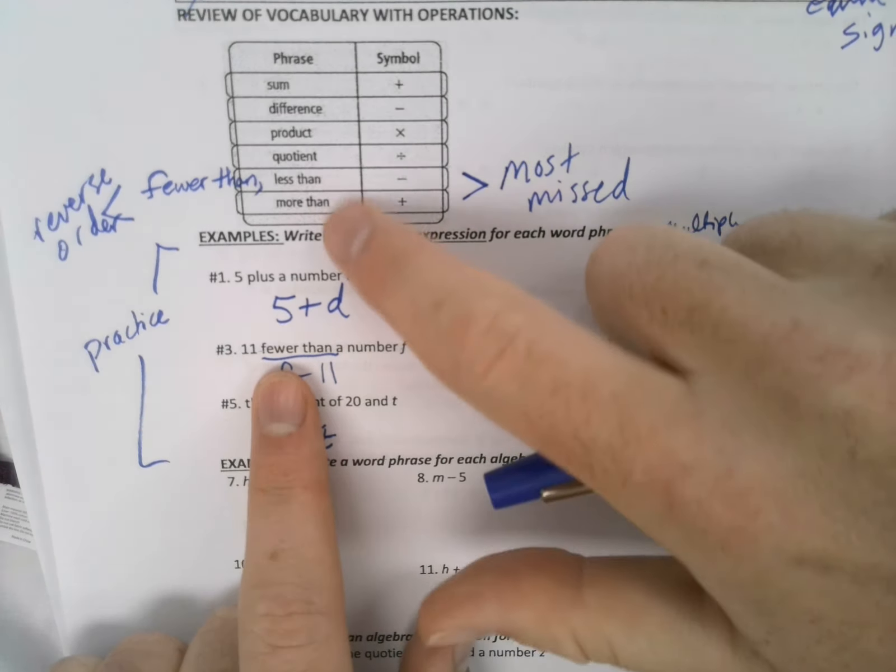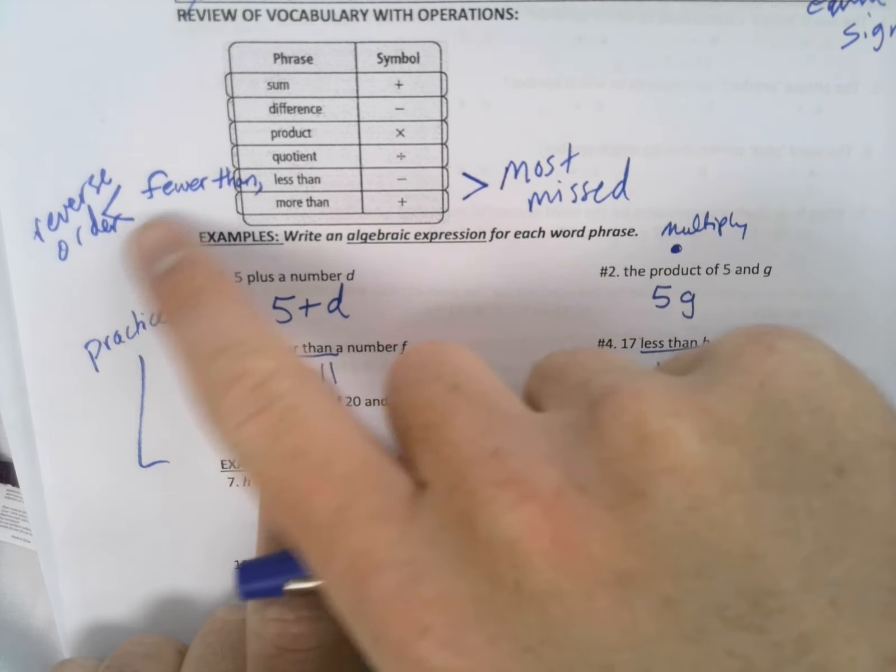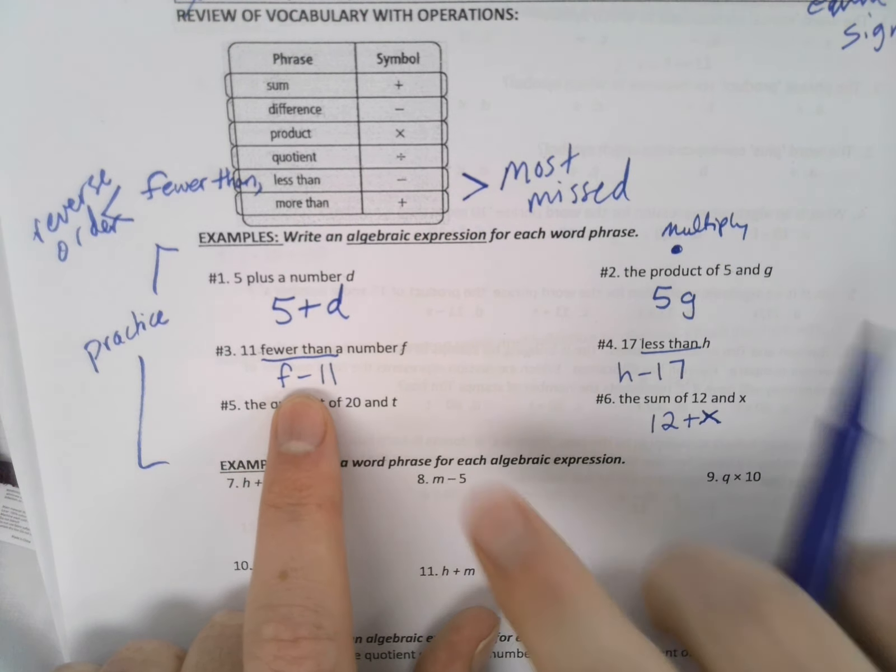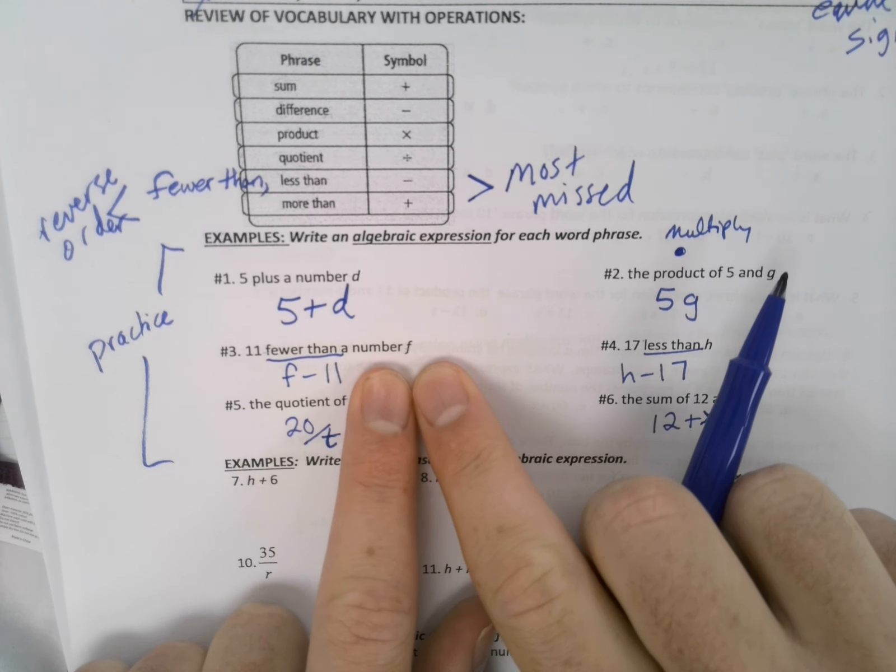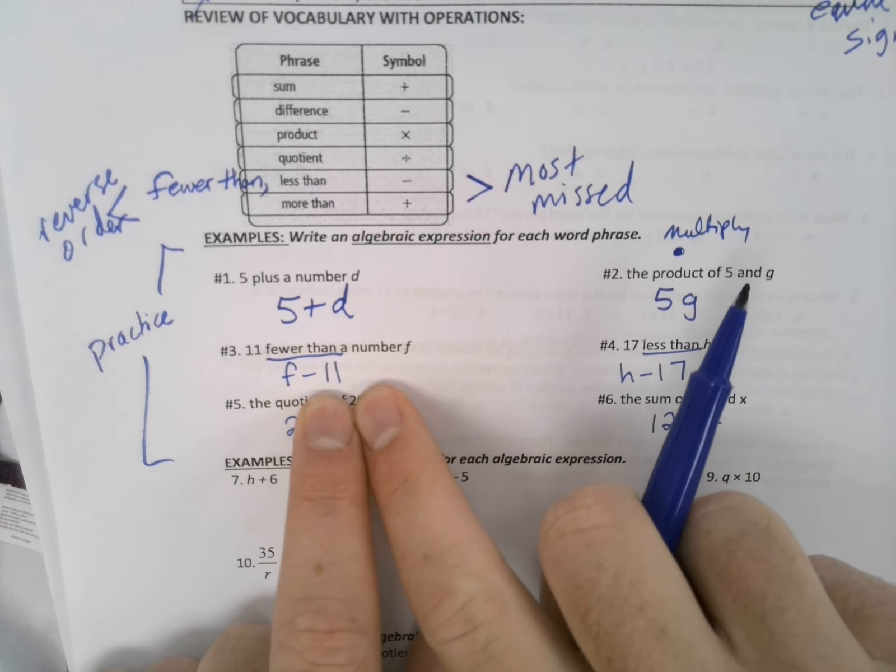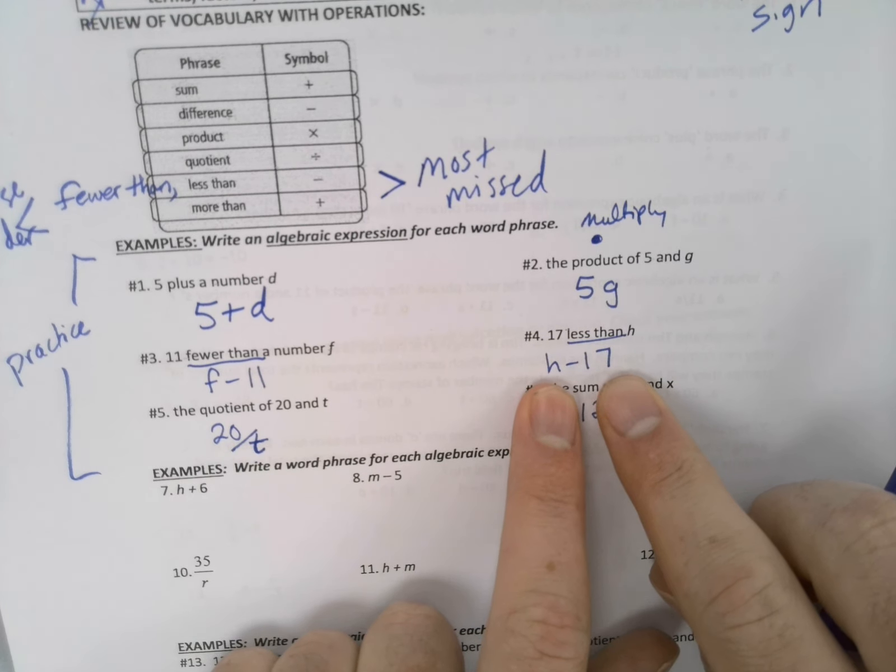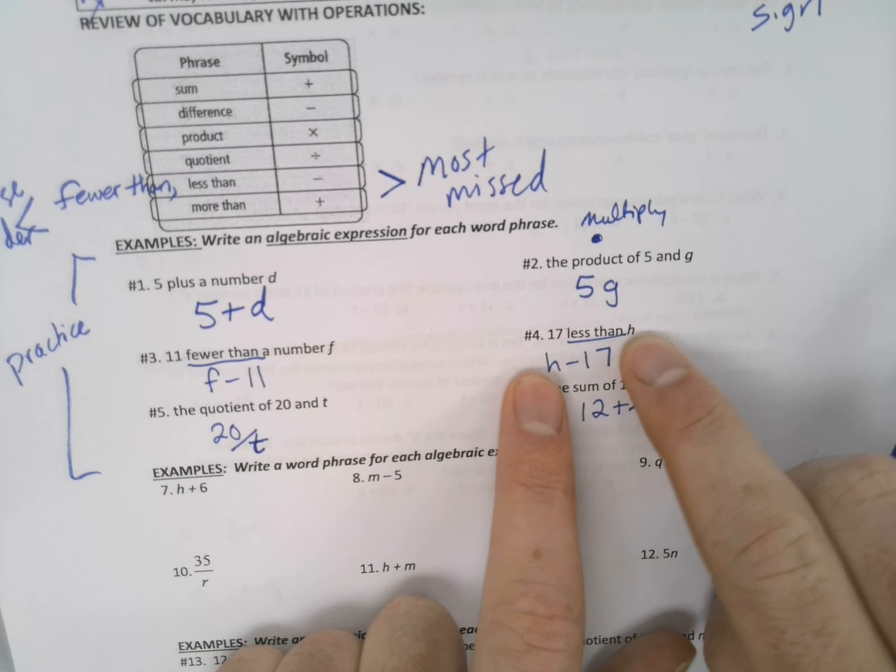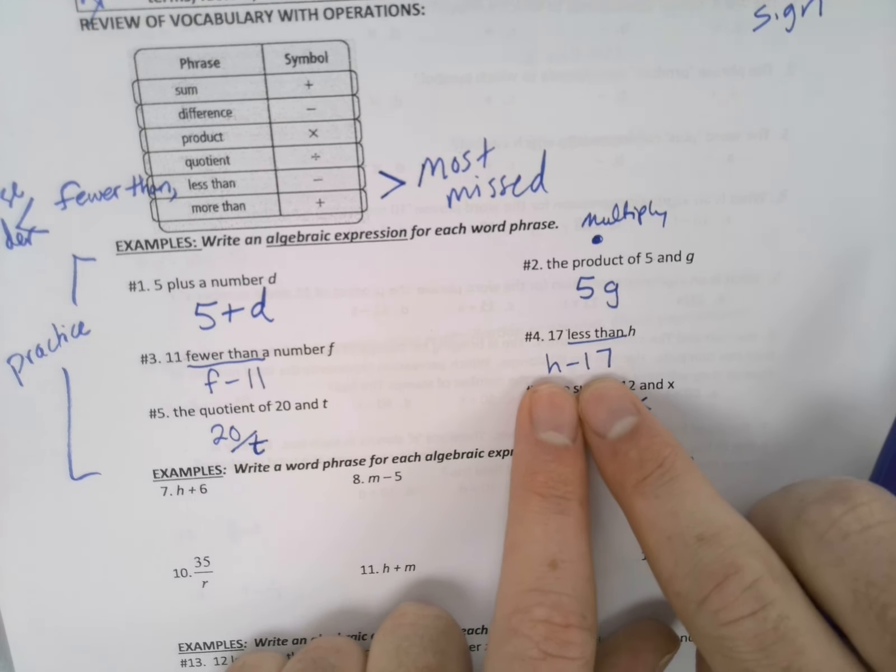Remember, fewer than and less than, or more than, means we're talking reverse order. So if we're 11 fewer than a number, that means we take that number and subtract 11 by it. Same thing with number four. If we're 17 less than H, we take H and we subtract 17.